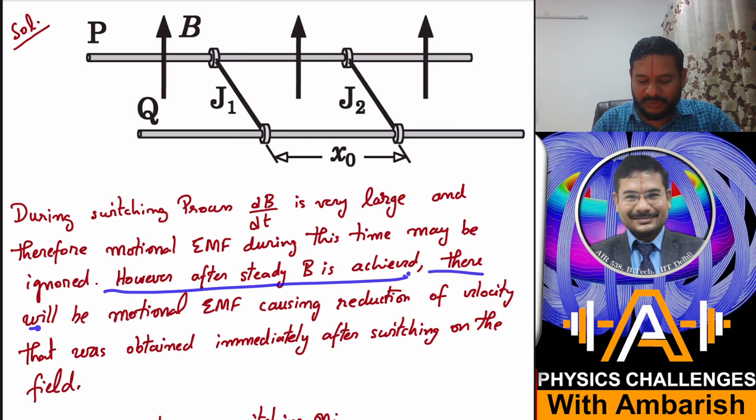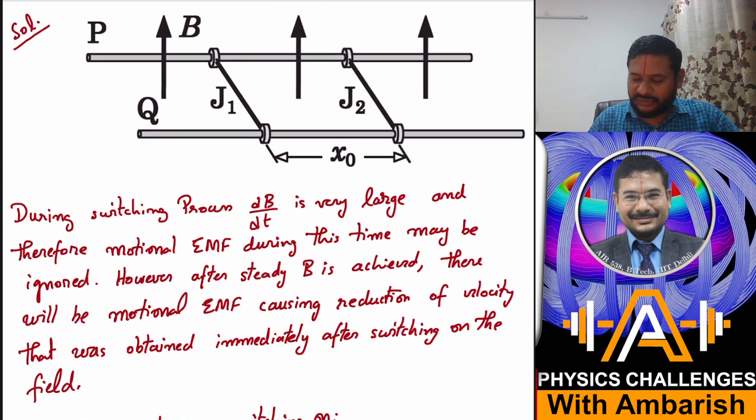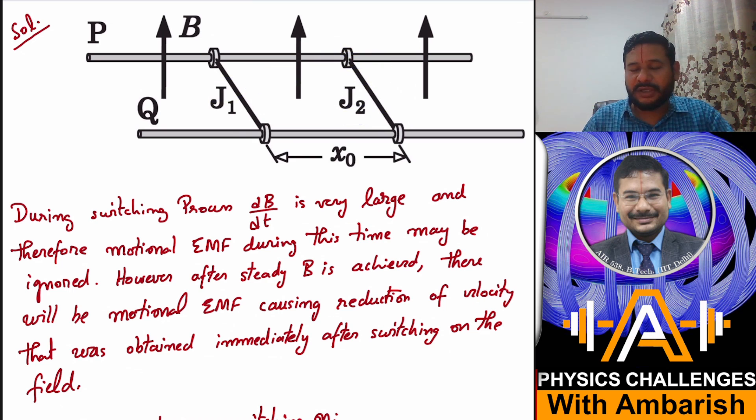However, after steady B is achieved, there will be motional EMF causing the reduction of velocity that was obtained immediately after switching of the field. Once this field is switched on and it attains certain steady value, at that time you'll find that these jumpers will have some velocity and that velocity will change with time.